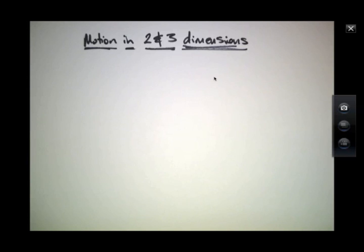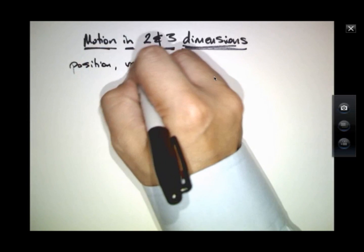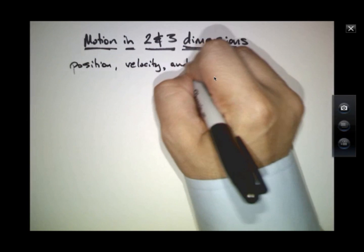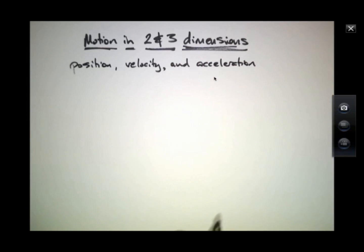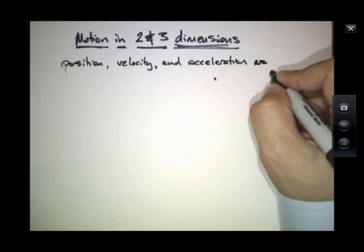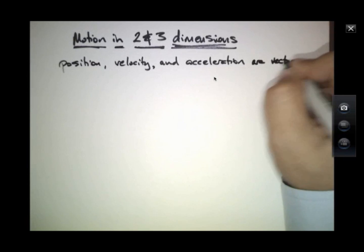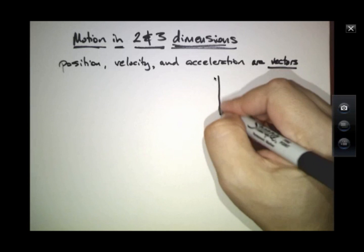We're going to talk next about motion of objects in more than one dimension. Up till now, the kinematic relationships that we've developed for position, velocity, and acceleration all have been quantities that we've graphed on a number line, but in more than one dimension, we have to consider these as vectors. This means that each of them will have a magnitude as well as a direction. It's helpful to visualize what we mean by a position vector.